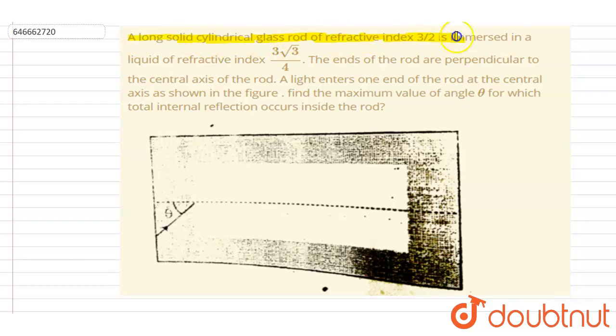glass rod of refractive index 3/2 is immersed in a liquid of refractive index 3√3/4. The ends of the rod are perpendicular to the central axis of the rod. A light enters at one end of the rod at the central axis as shown in the figure. Find the maximum value of θ for which the total internal reflection occurs inside the rod.